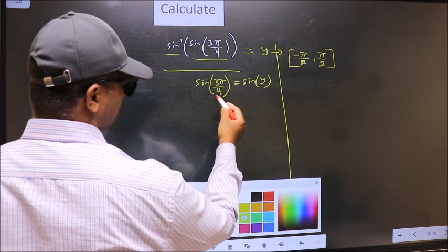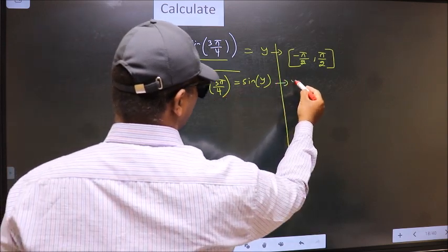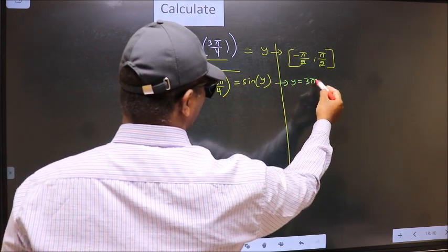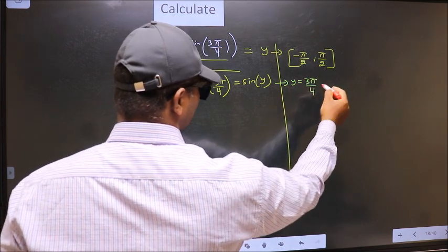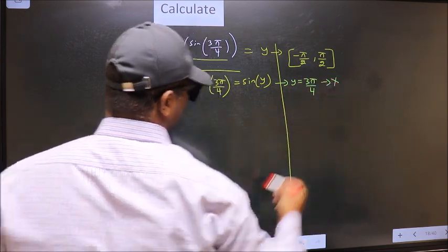Now comparing both sides we get y to be 3π by 4. Does this lie in this interval? No. So we should reject this answer.